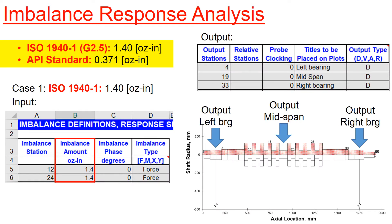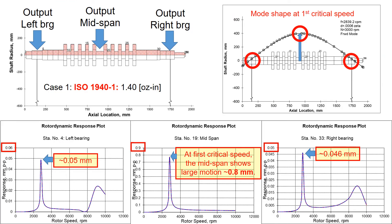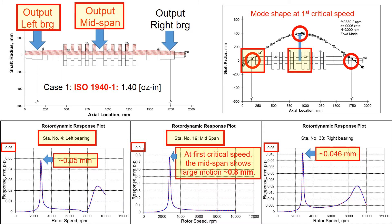Based on the calculated allowable imbalance, you can input those numbers into the rotor dynamic software. I'm going to set the ISO spec limit as an input for the first case run. Then define the output locations you are interested in — I typically look into the bearing locations and mid-span locations, as shown in the right figure. If you want to compare with rotor dynamic test measurements, you could pinpoint the location of the probe sensors from the model. Once you run the response analysis, the outcome shows responses at the left bearing, at the middle of the rotor, and at the right bearing.